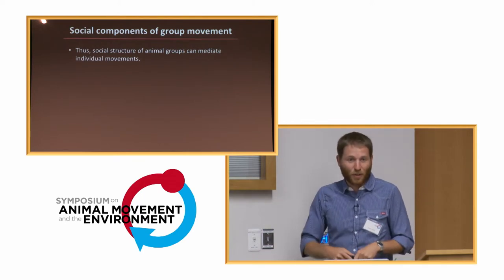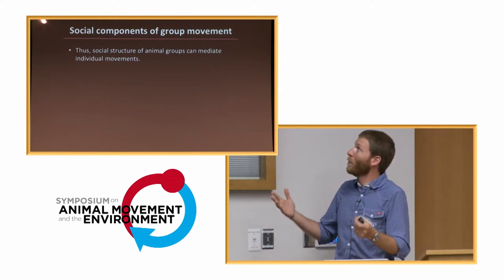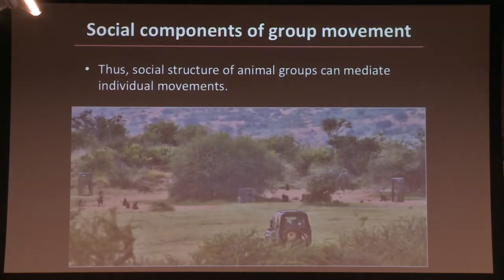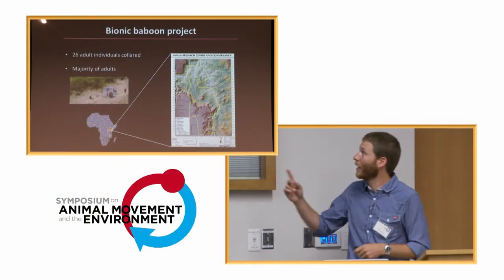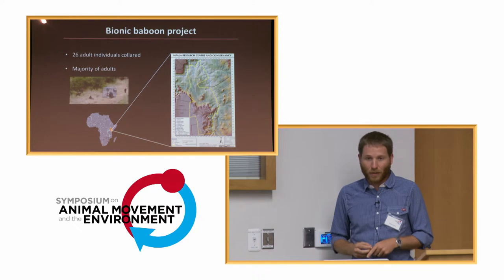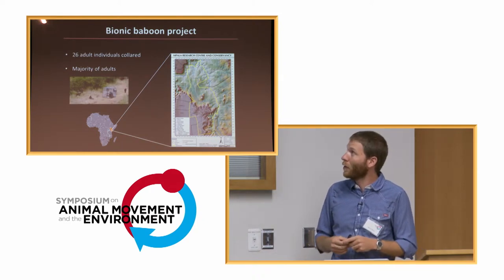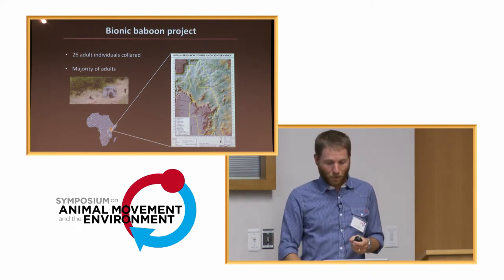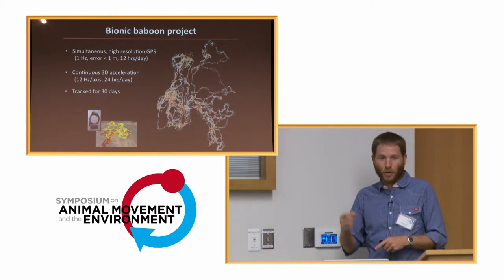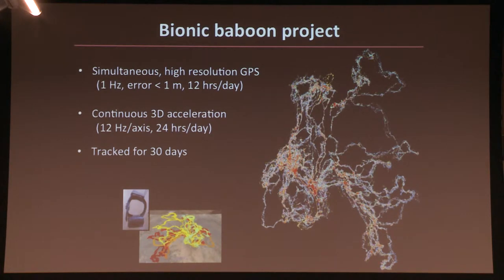We work on baboons in Kenya to explore some of the parameters of this. Baboons are a widespread primate found throughout sub-Saharan Africa. We worked at Impala Research Center in Kenya, where collaborators from MPIO captured the majority of adults in a troop — 34 individuals in total, of which 26 were adults, missing only one or two — and GPS-collared every individual. These GPS collars recorded high-resolution one-hertz data with very low error during daylight hours when the troop was moving, as well as continuous acceleration data, over approximately 30 days.